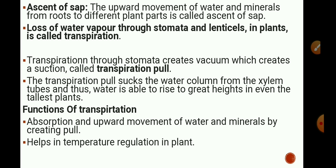With the help of transpiration pull, osmosis and diffusion, water and minerals reach the leaves. Leaves utilize this water and minerals to prepare food. The function of transpiration is to help in absorption and upward movement of water and minerals by creating transpiration pull. It also helps in temperature regulation.